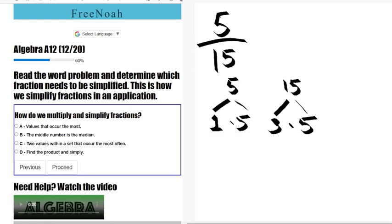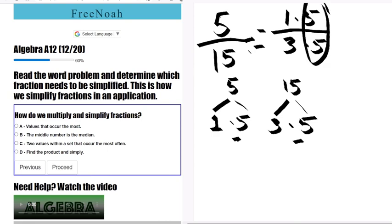Remember that a times c over b times c equals a over b times c over c. So this right here says 5 over 15 equals 1 times 5 over 3 times 5.